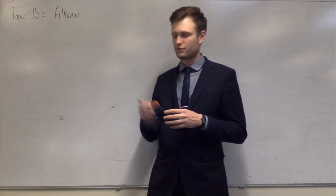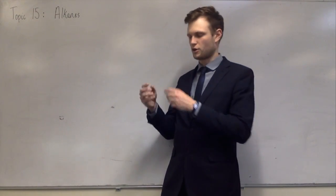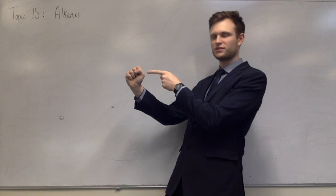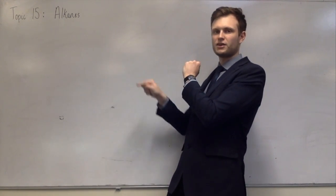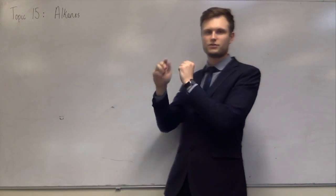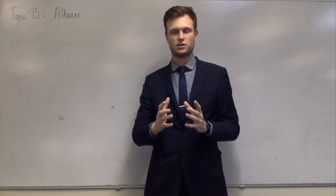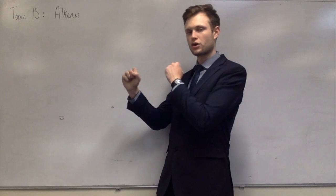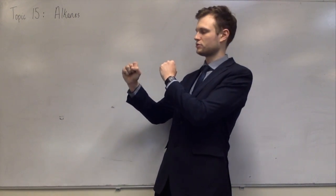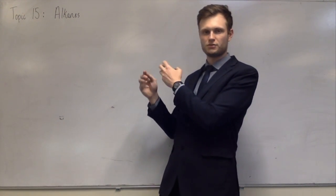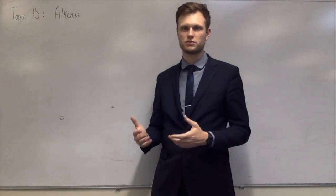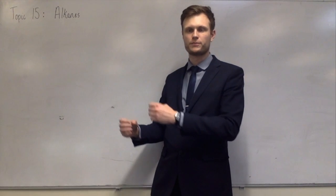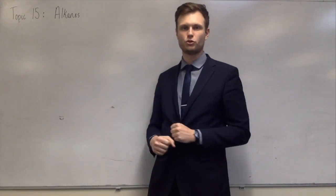A sigma bond is one where if you look along the bond — if you have an atom here and an atom there and you look along the bond from this side — then the shape is circular. The same way as if you look at an S orbital, it looks circular from any side. If you look along a single bond, it looks circular in terms of where the electrons are, and that is a sigma bond. Sigma is the Greek letter S, so that's quite an easy way to remember. A sigma bond is any single bond.